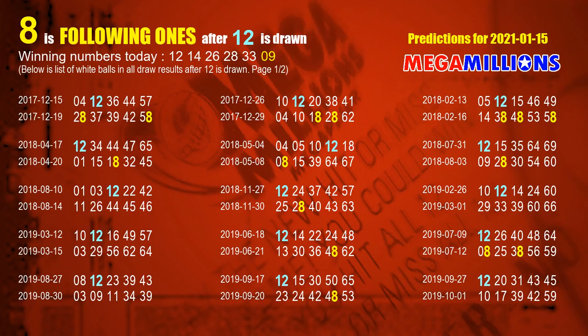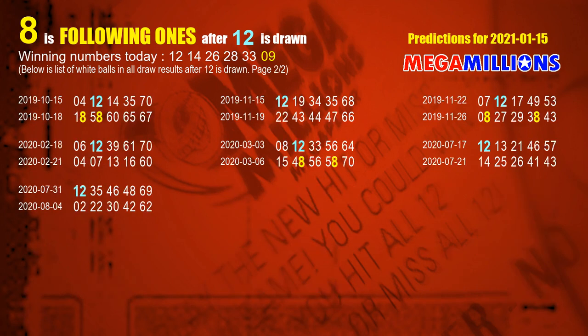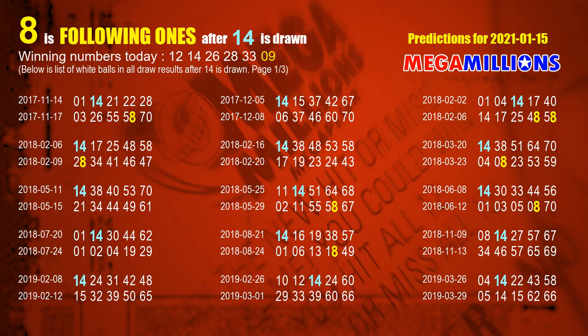The first white ball is 12. We list all draw results which come after a draw with 12 as a white ball winning number. The most frequently following units digit is 8 when 12 is the winning number in the last draw — we've already highlighted units digit 8 in yellow for you. The second white ball is 14, and the most frequently following units digit is also 8 when 14 is the winning number in the last draw.